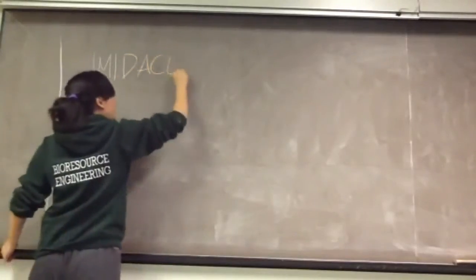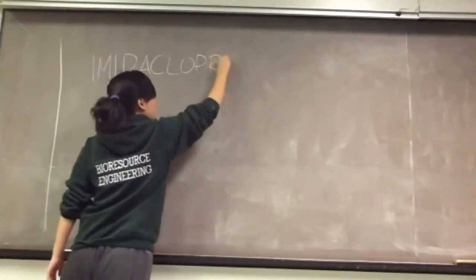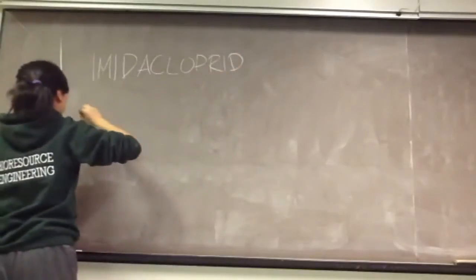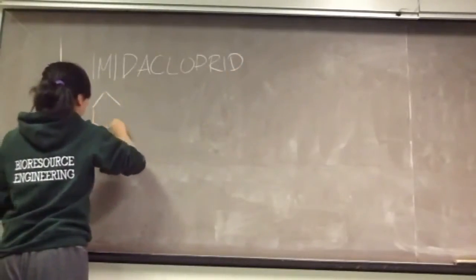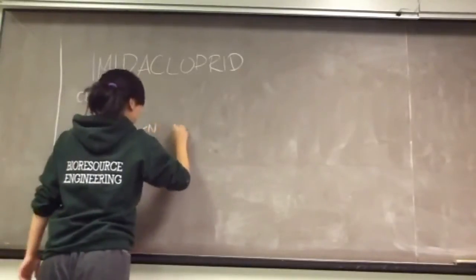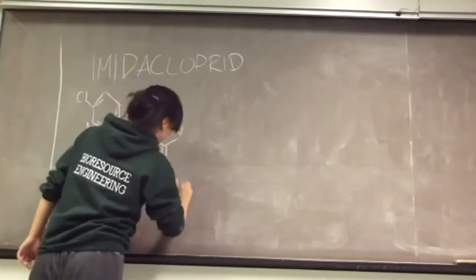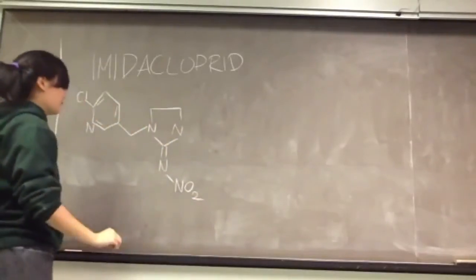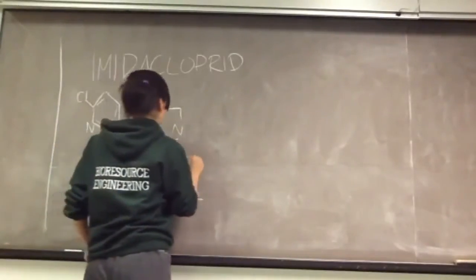Let's look at an example. We're interested in treating imidacloprid, a widely used neonicotinoid. This nitrogen radical is called the magic nitro due to its binding properties which allow the chemical to bind to the insects. Pseudomonas is the microbe which is chosen to be used as it is a naturally occurring genus and can be used to degrade many different types of pesticides.